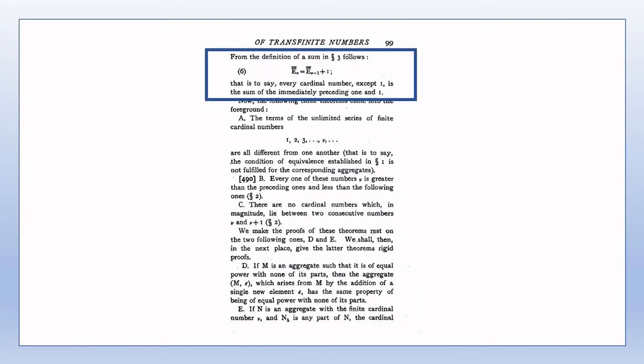The only finite cardinal number that is not the sum of the immediately preceding cardinal number and one is one itself. It seems clear from this that zero is not included amongst the finite cardinal numbers. That's not necessarily to suggest that there isn't or couldn't be a cardinal number zero, but that such a cardinal number is not counted amongst the finite cardinal numbers. Cantor's comments that every cardinal number except one is the sum of the immediately preceding one and one applies only to the finite cardinal numbers defined in this section.